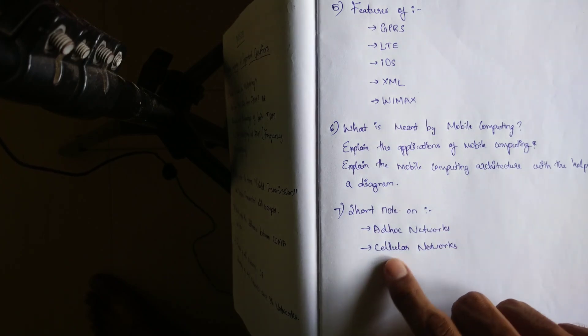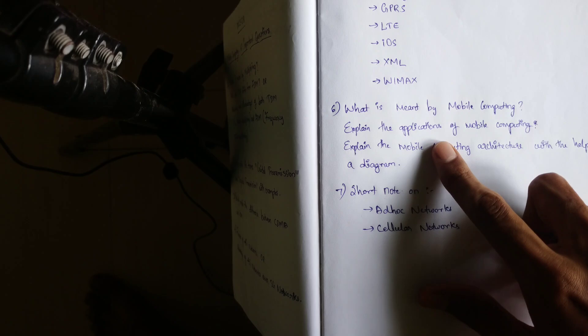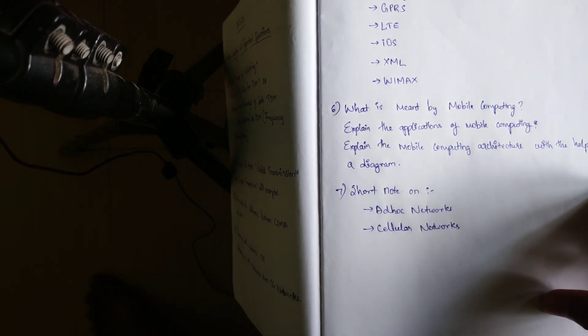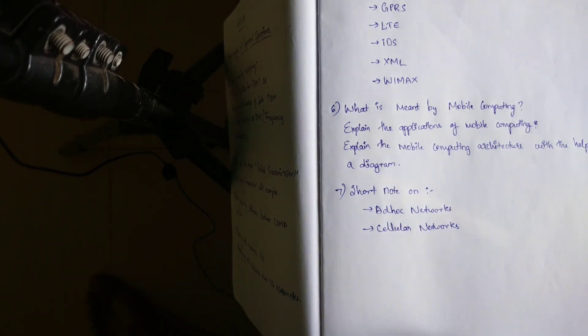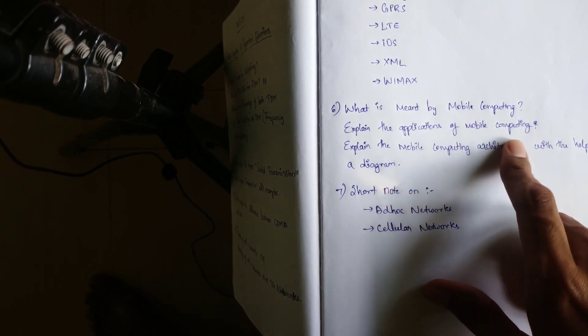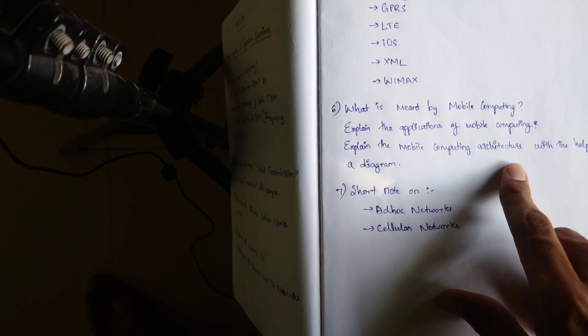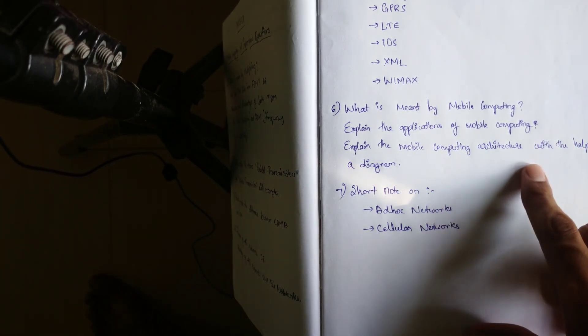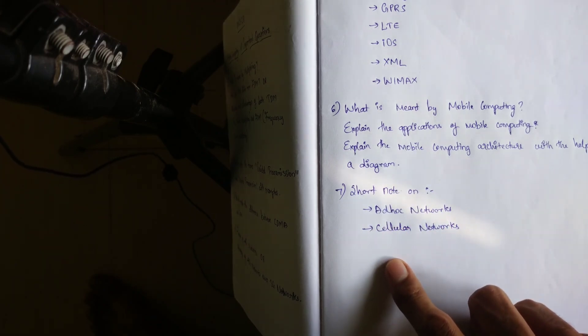It's basically a general question on this subject. What is meant by mobile computing? Applications of mobile computing? And mobile computing architecture with the help of a diagram. So you can focus on the definition of mobile computing and its applications as well. This one I have added, either it can be asked or it cannot be asked. So if you have time to go through this one, mobile computing architecture, you can cover that one also.